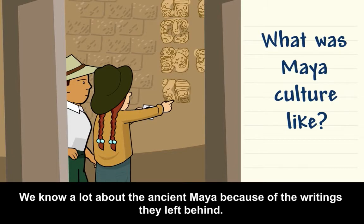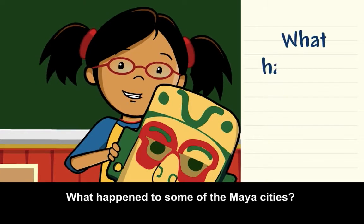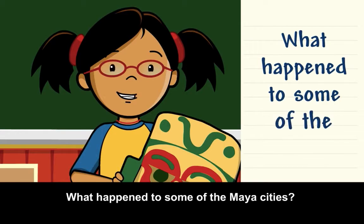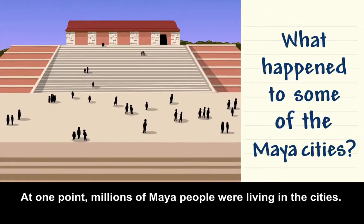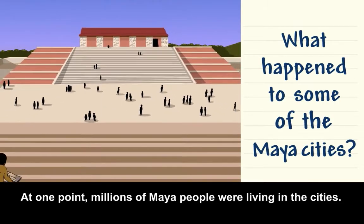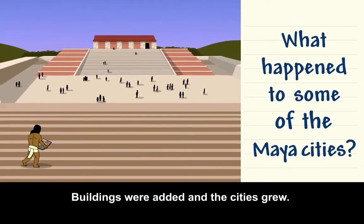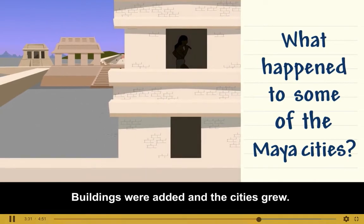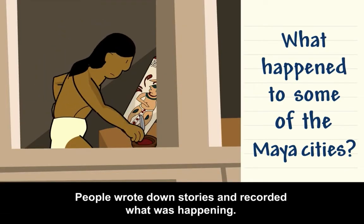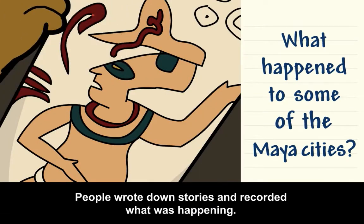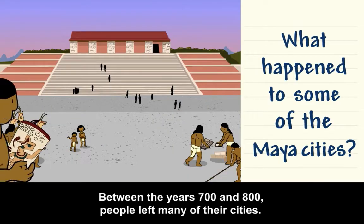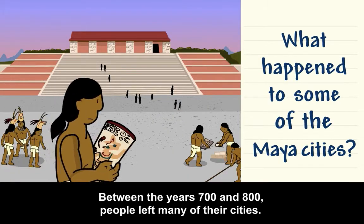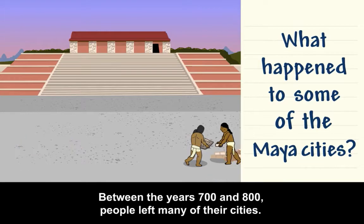Today, experts have figured out how to read and understand some of the language. We know a lot about the ancient Maya because of the writings they left behind. What happened to some of the Maya cities? At one point, millions of Maya people were living in the cities. Buildings were added and the cities grew. People wrote down stories and recorded what was happening. But between the years 700 and 800, people left many of their cities.